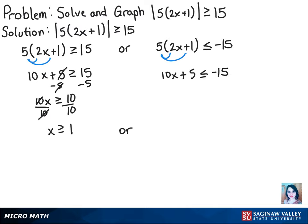So then we'll get 10x plus 5 is less than or equal to negative 15. Now we can subtract 5 from both sides, and then we'll get 10x is less than or equal to negative 20. And after we divide by 10 on both sides, we'll have x is less than or equal to negative 2.